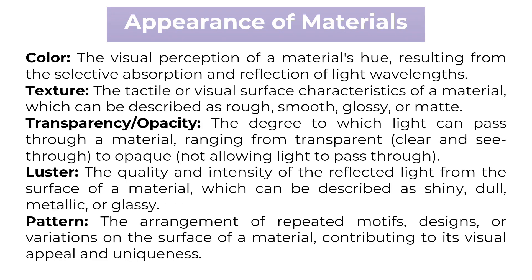Appearance of materials. Color is the visual perception of a material's hue, resulting from the selective absorption and reflection of light wavelengths. Texture refers to the tactile or visual surface characteristics of a material, which can be described as rough, smooth, glossy, or matte. Transparency and opacity describe the degree to which light can pass through a material, ranging from transparent (clear and see-through) to opaque (not allowing light to pass through). Luster is the quality and intensity of reflected light from a surface, described as shiny, dull, metallic, or glassy. Pattern refers to the arrangement of repeated motifs, designs, or variations on the surface of a material, contributing to its visual appeal and uniqueness.